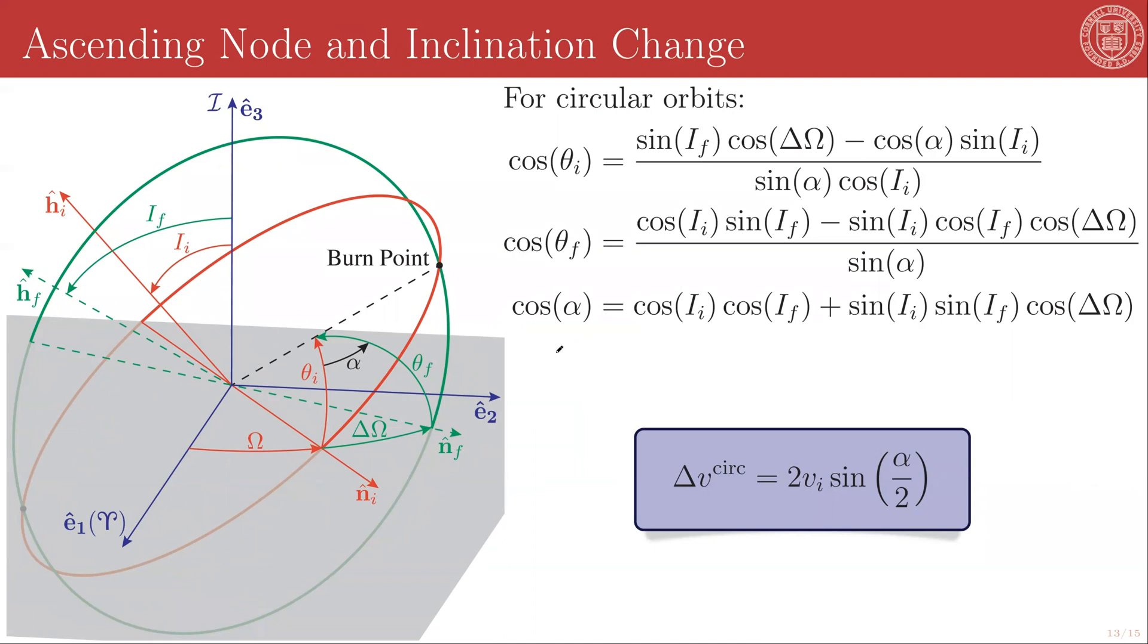If you want to change your inclination and the ascending node, you can do so. And again, this is the case for circular orbits. You have pretty much the same geometric setup, except now you don't have a single inclination. You have an initial inclination and a final inclination. And everything else remains pretty much the same, except for the equation for the burn angle has to incorporate both the initial and final inclinations.